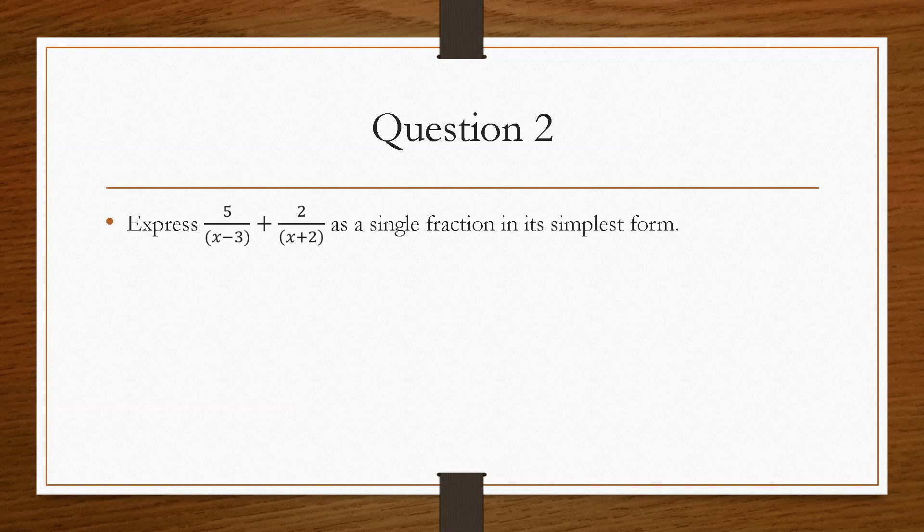Now the next one gives us two separate fractions, and asks us to express these two as a single fraction in its simplest form. So again, we'll write out the two fractions, and we will solve this using the kiss and smile method, because we need a common denominator on the bottom of the fraction.